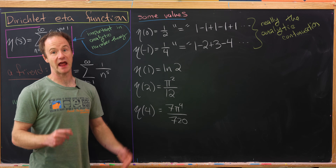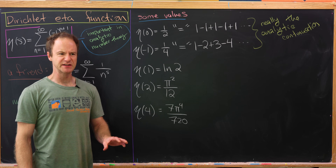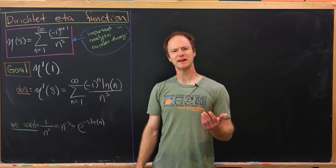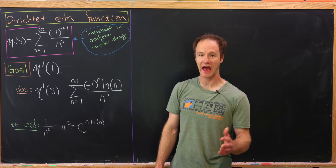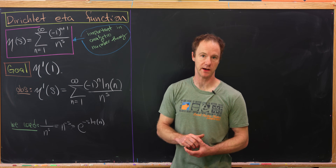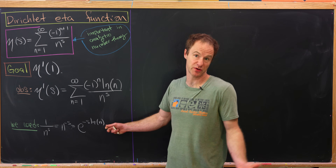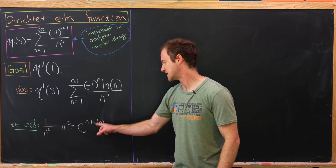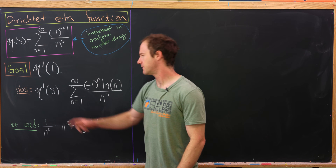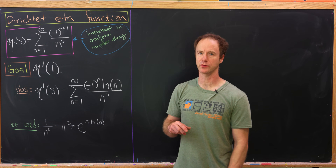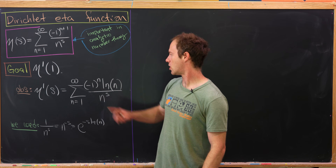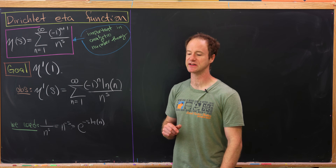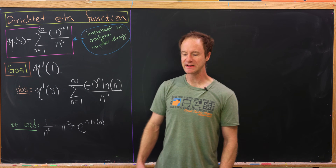Now that we know what the eta function is, let's move into our main result: calculating its derivative at 1. Using the fact that 1 over n to the s equals e to the minus s times the natural log of n, the derivative of the eta function at an arbitrary s is the alternating sum of the natural log of n over n to the s.